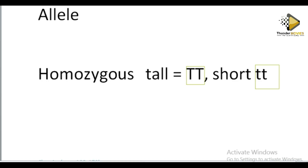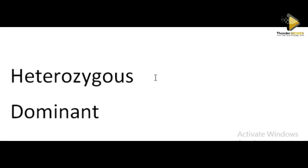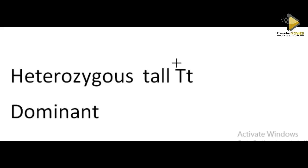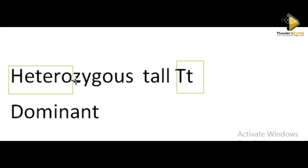But if the alleles are of a different kind, then we talk about something else. For example, you are tall but you have a capital T and then a small t. It means your alleles are not the same — you have one for tallness and one for shortness. The alleles you have are different. Therefore they are 'hetero.' When you say hetero, it means something which is different. Alleles which are different — we call the condition heterozygous.